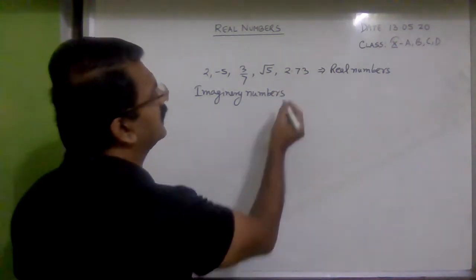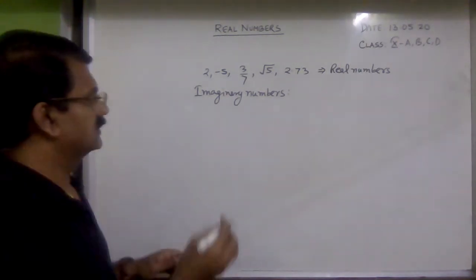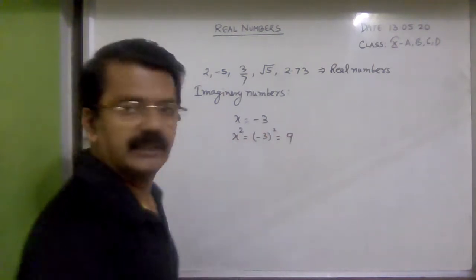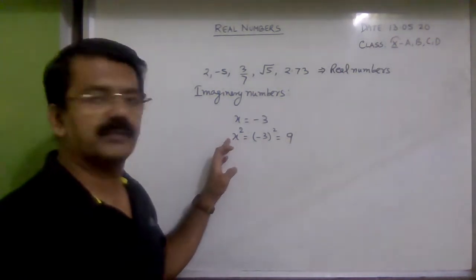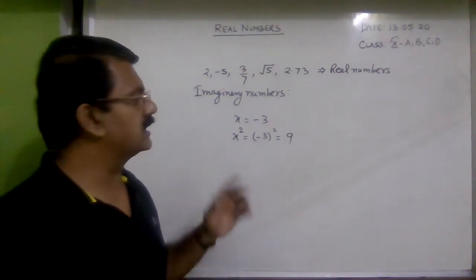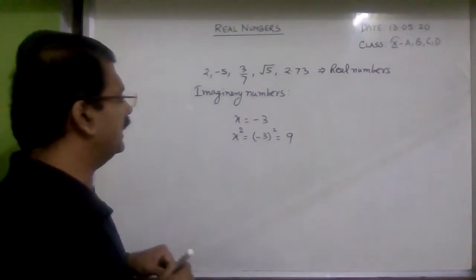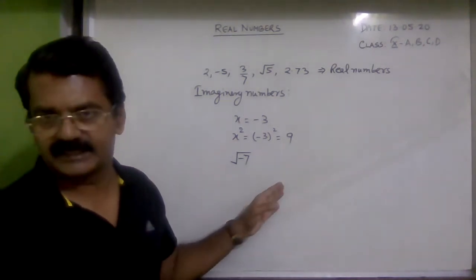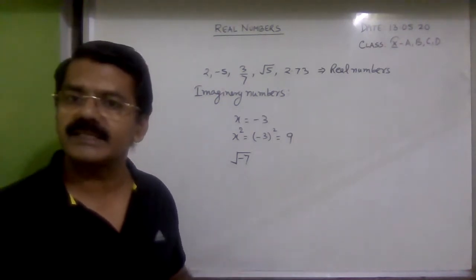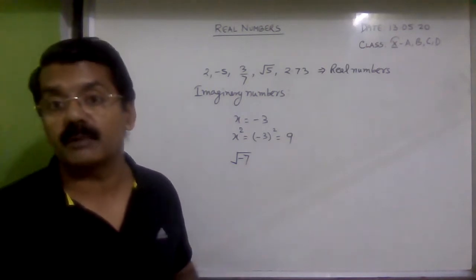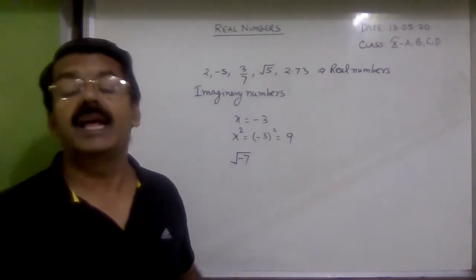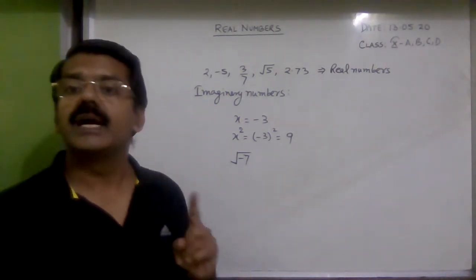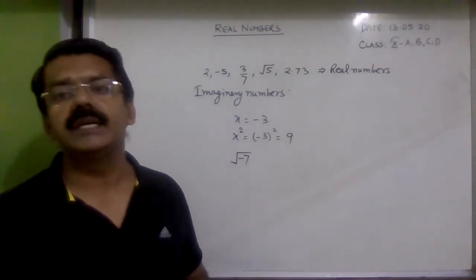What are imaginary numbers? Suppose x is equal to minus 3, then x squared will be minus 3 squared, which equals 9. That means the square of any number, whether positive or negative, will always be positive. Now if I write square root of minus 7, and if square root of minus 7 is x and you square both sides, then x squared equals minus 7. But the square of any number cannot be negative. So x will not have any real value — these numbers are called imaginary numbers. Always remember: the square root of a negative number is an imaginary number.